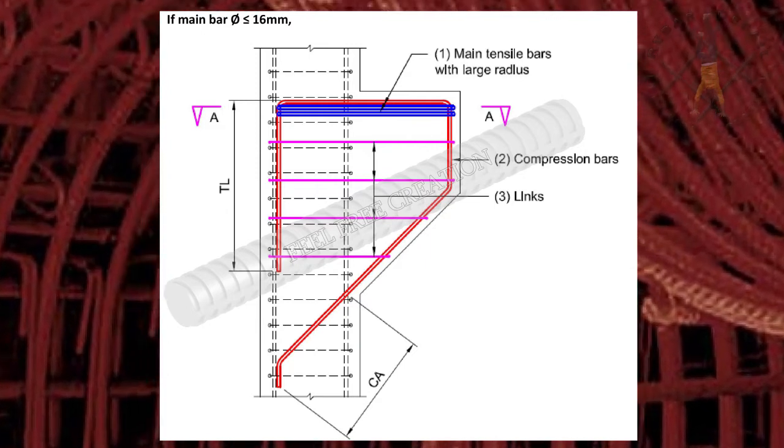If main bar diameter is less than or equal to 16 millimeters, the arrangement can be suggested, where CA is compression anchorage and TL is tension lap.